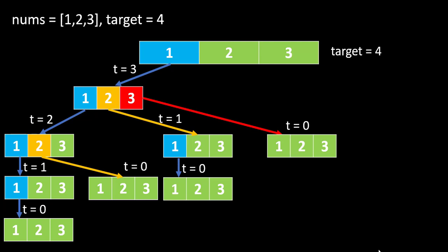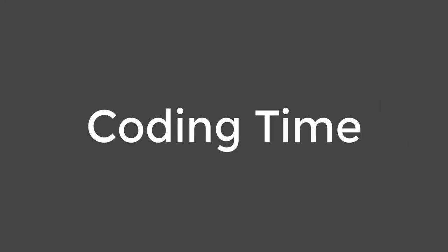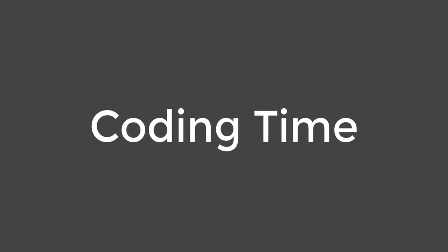At each level we have the choice of using any of the three numbers. For all numbers smaller than the target we continuously call the same function with the updated target to get the total number of combinations. When the target equals zero there is only one combination, so that becomes our base condition — if the target is zero we return one.